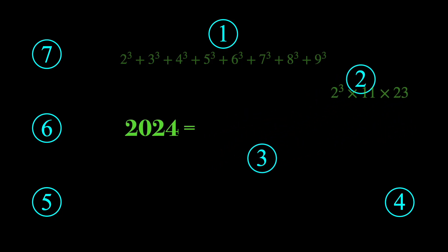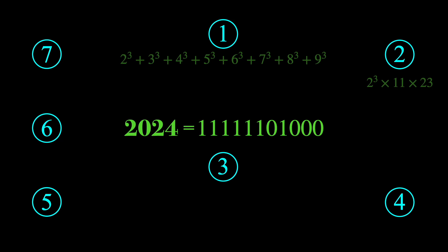This third one is pretty cool. 2024's binary representation contains seven ones, which means that it's a pernicious number. A pernicious number is any positive integer that has a prime number of ones in its binary representation.